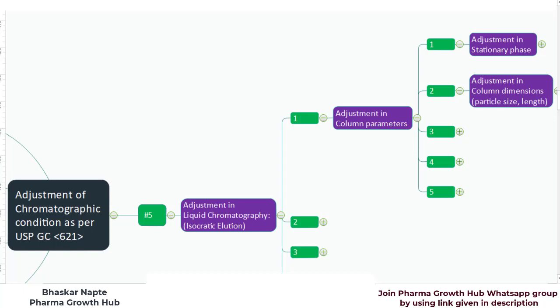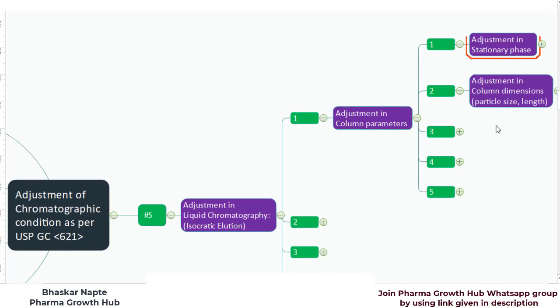We will talk about adjustment in liquid chromatography in isocratic elution, and very specifically we will talk about adjustment in column parameters — particle size and length.